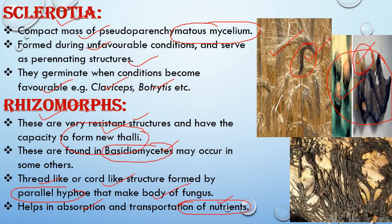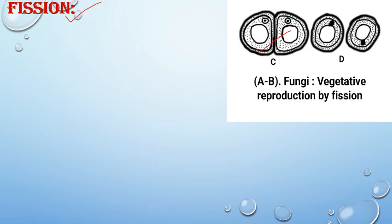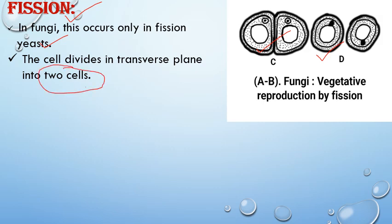The next method is fission. It involves the division of a vegetative cell into two cells. It occurs in fission yeast, where the cell divides in the transverse plane into two daughter cells, and each cell behaves as an independent cell.